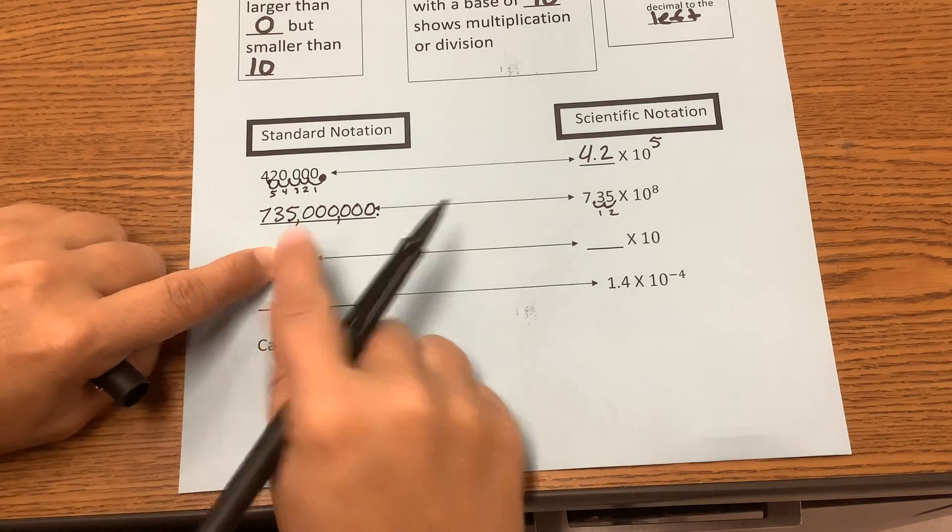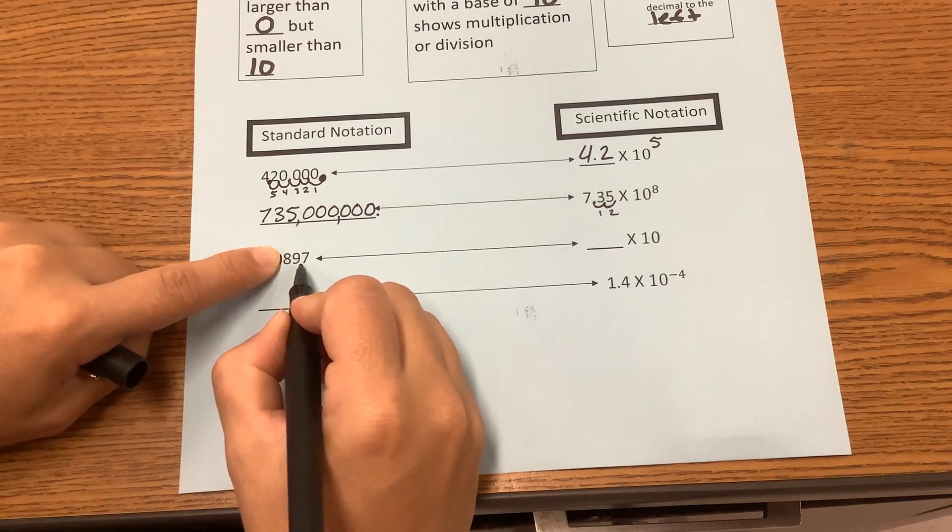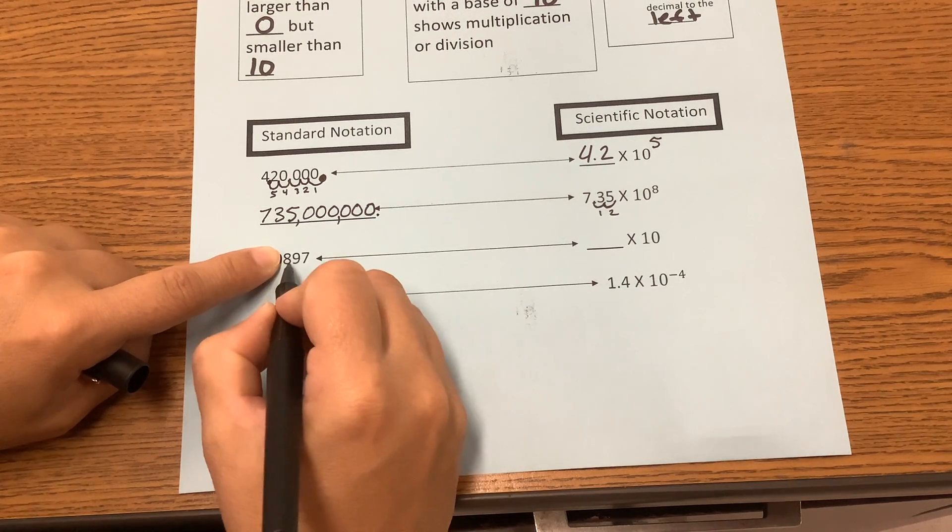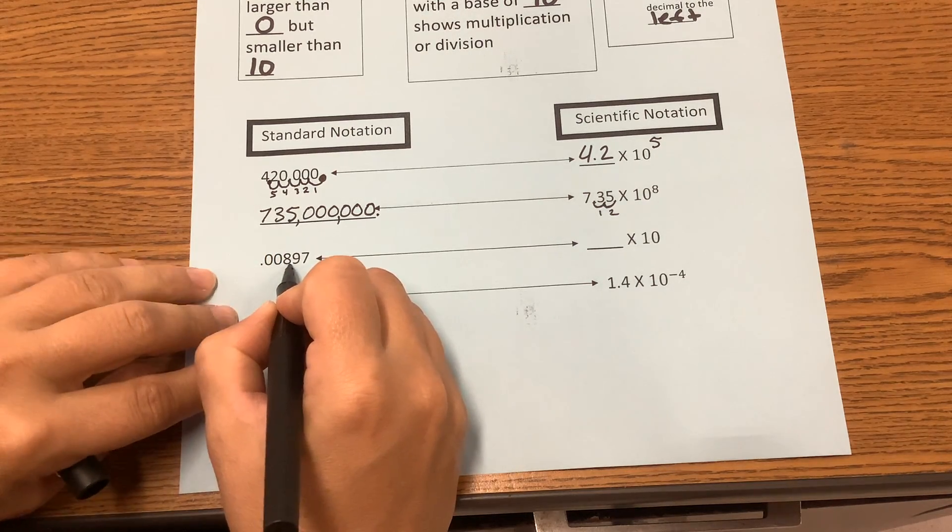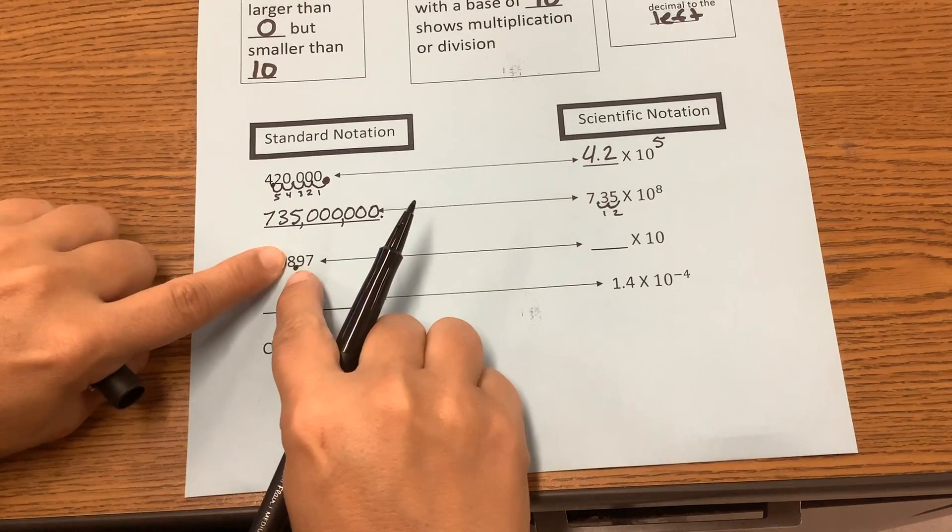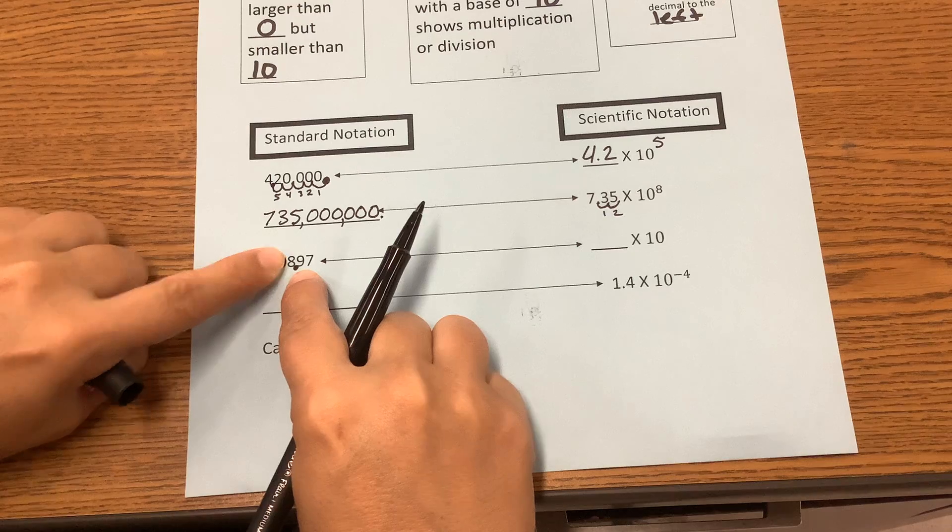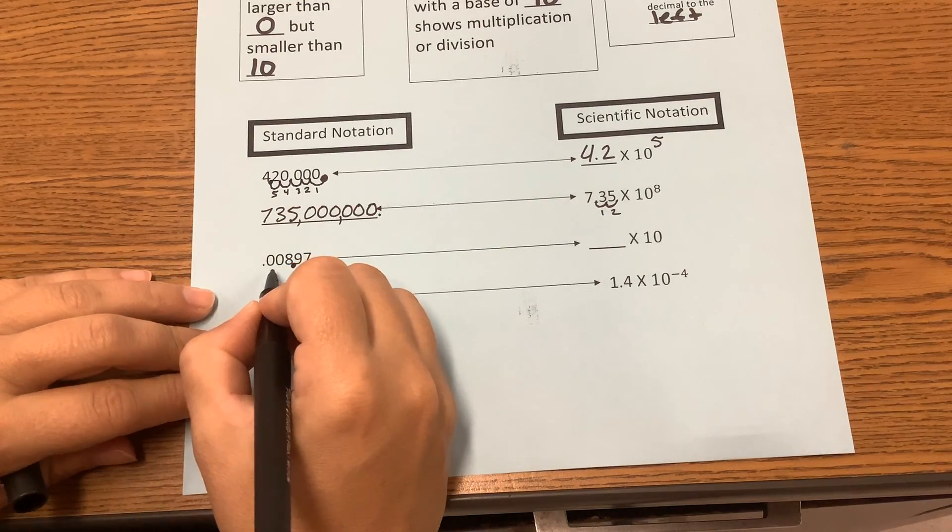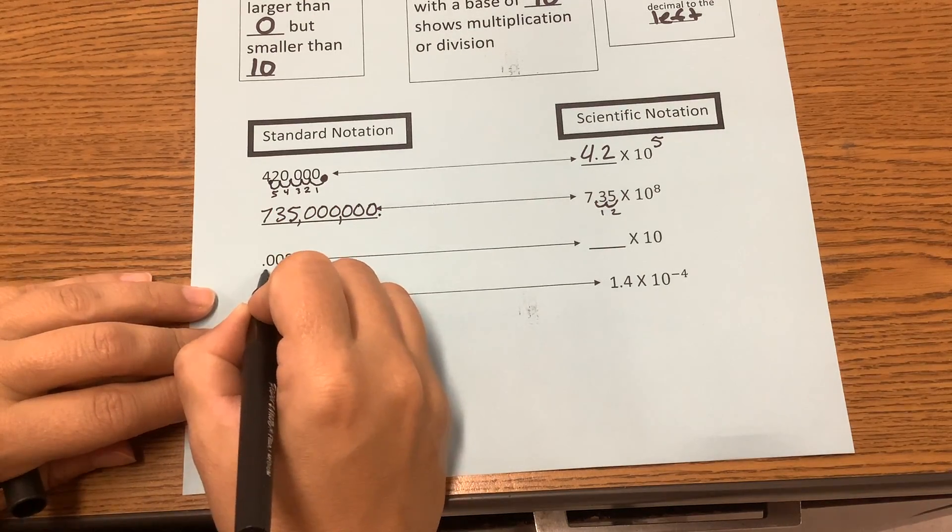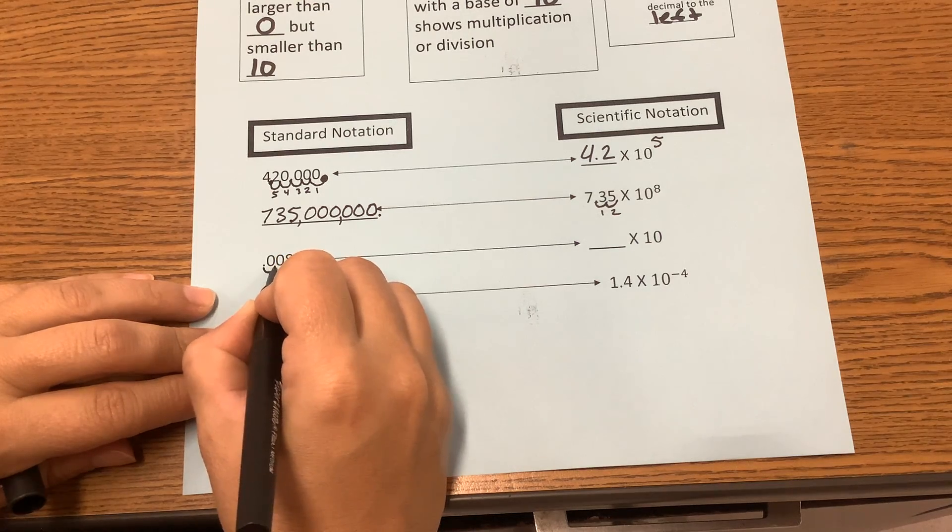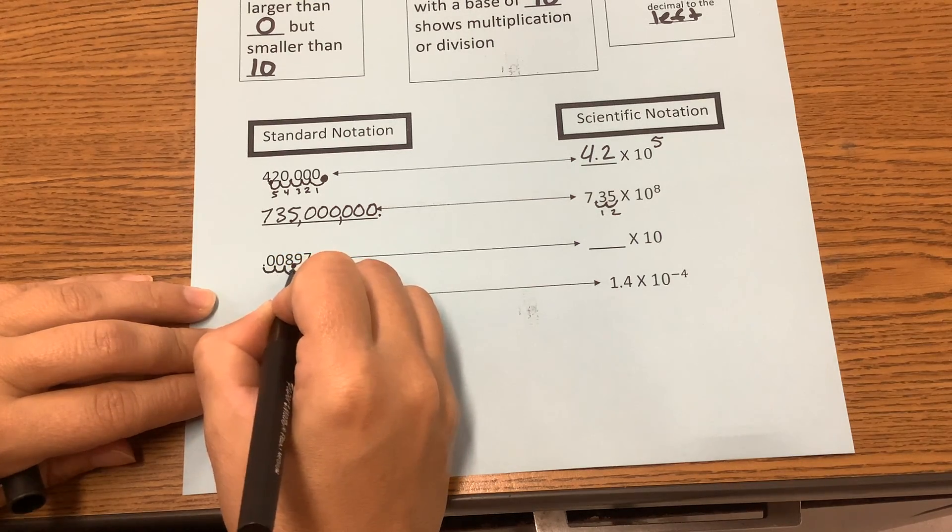If I put it between the 9 and 7, that's going to give me 89.7. Is that number below 10? Put it between the 8 and 9 because 8.9 is between 1 and 10. So our whole number must be larger than 0 but smaller than 10. So it has to be moved 1, 2, 3 places.